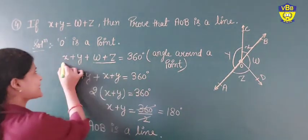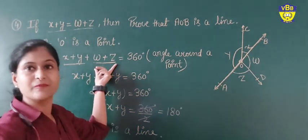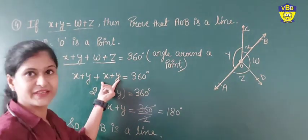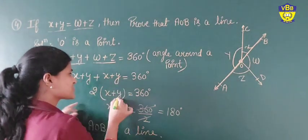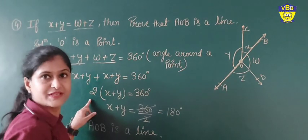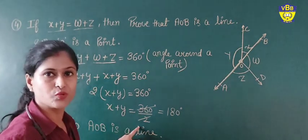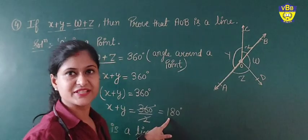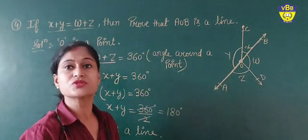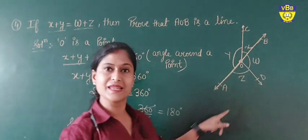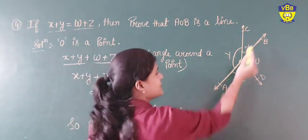As it is given x plus y is equal to w plus z, so in place of w plus z I am writing x plus y here. So twice of x plus twice of y — you can write 2x plus 2y is equal to 360 degrees. Dividing by 2, it becomes 180 degrees. If the sum of these two angles is equal to 180 degrees, then AOB is a line. So we can say AOB is our line.